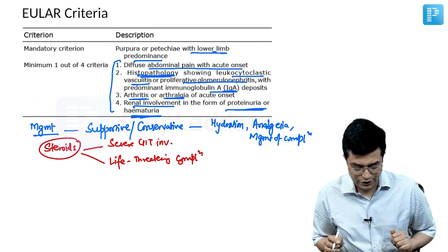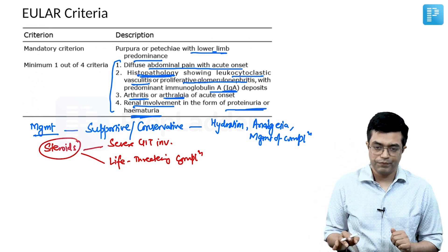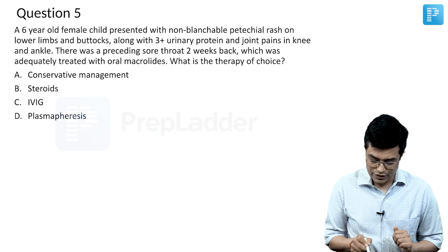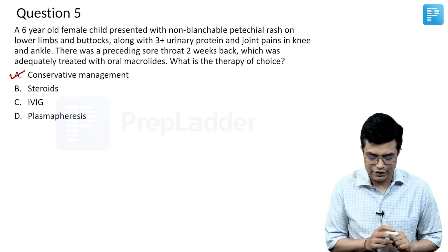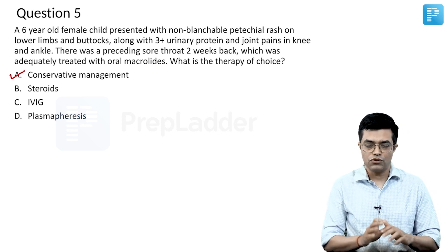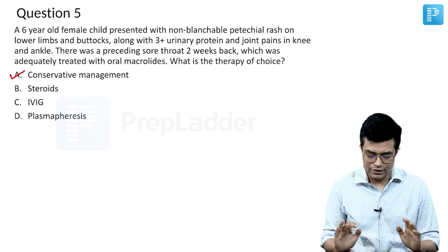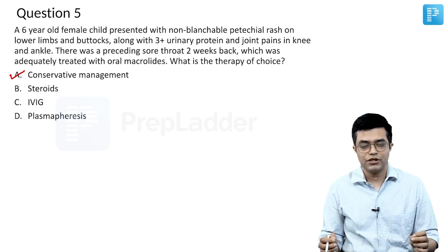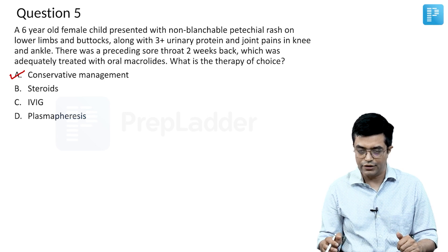This is the management that we give for Henoch-Schönlein Purpura. Looking at the option again, the diagnosis is HSP, and conservative management is needed. There is no GI involvement in the question. There is no life-threatening feature present in the patient, and so conservative management will be needed.